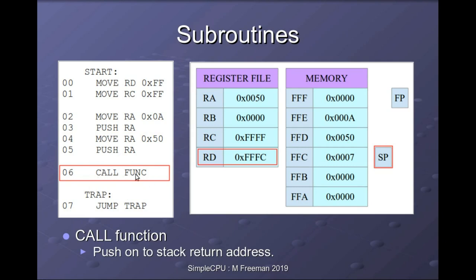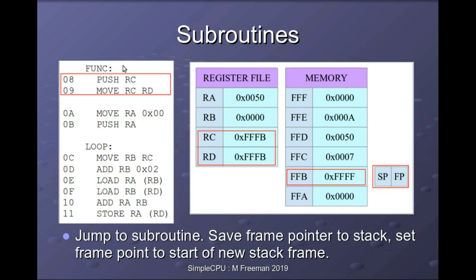Now we're ready to call our function, so we execute the call instruction. That pushes the return address onto the stack — the call instruction is at address 6, so it pushes address 7, which is where execution should resume. The stack pointer is decremented to the next free location and the value 7 is transferred to the stack. Then we jump to our multiplication function.